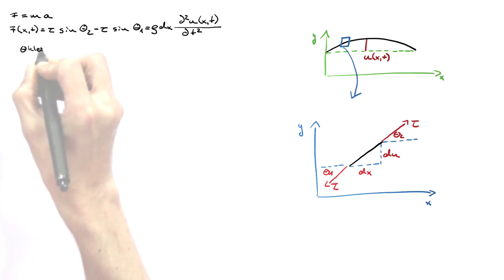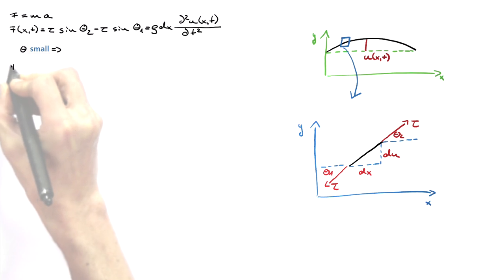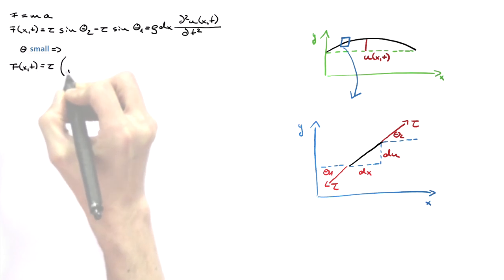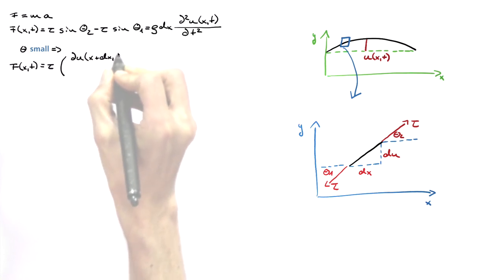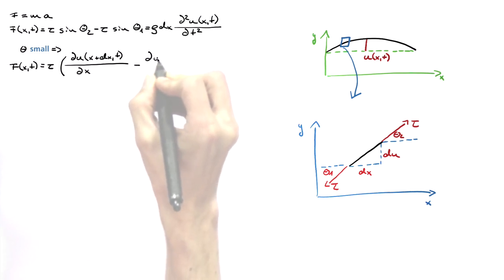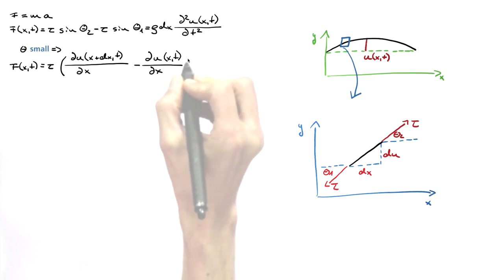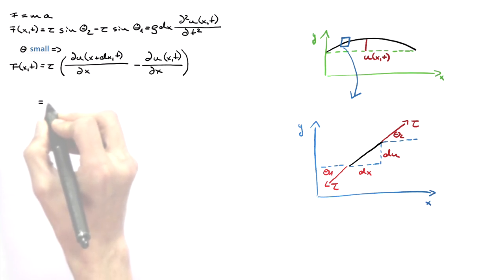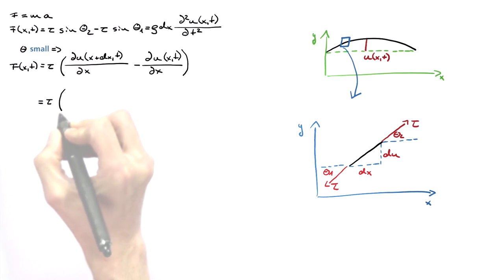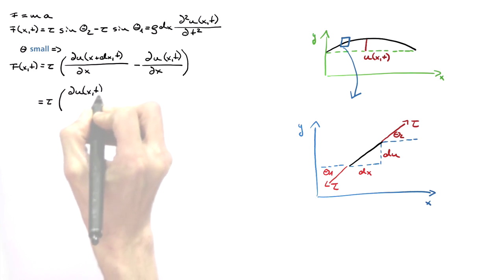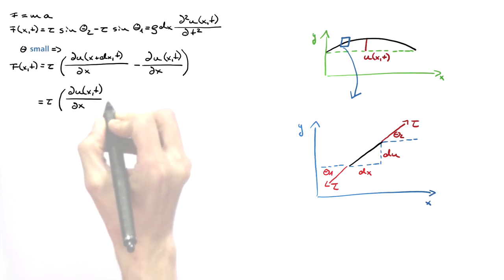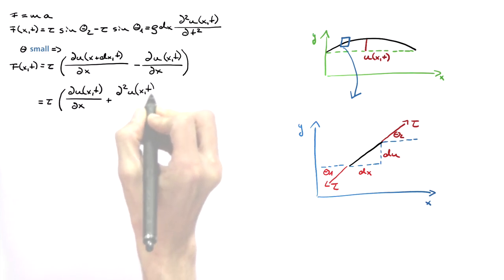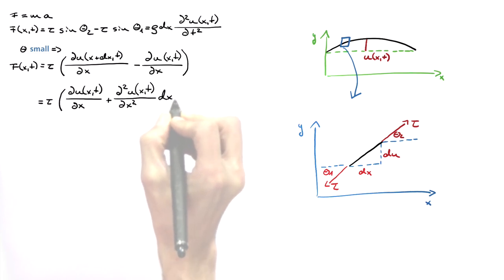f equals tau times du of x plus dx and t, differentiated with respect to dx minus du over dx. In the next step, we approximate the first term in the brackets, that means the force on the upper end. This is the sum of the force on the lower end du of x and t over dx plus the change along the path dx, second-order derivative of u of x and t over dx squared times dx.